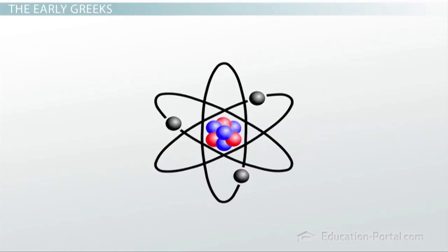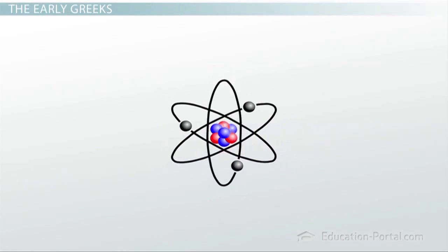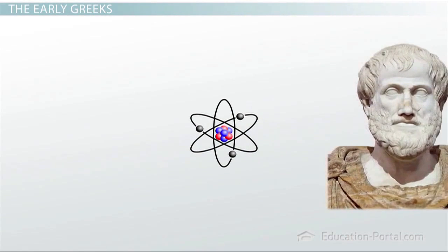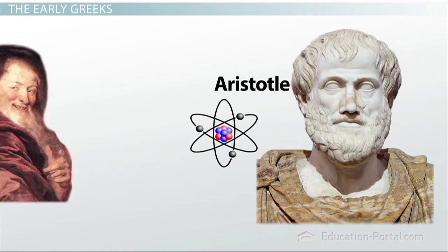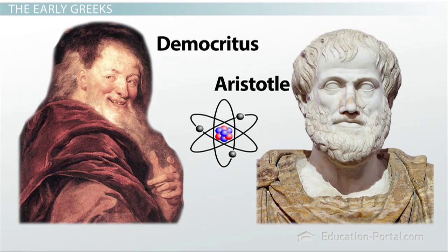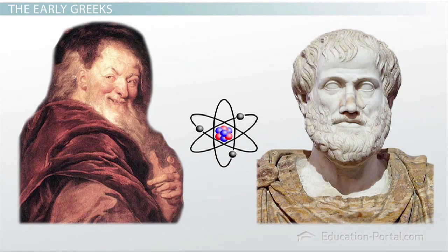First, we are going to travel back a little over 2,000 years ago to the times of Aristotle and Democritus. The Greek philosopher Aristotle believed that matter could be divided infinitely without changing its properties. Democritus disagreed. He thought that matter could only be divided until you got to the smallest particle, which he called the atom.